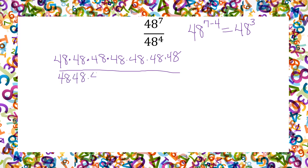These do divide out because 48 divided by itself is 1, and you're just left with 48 three times, which is 48 cubed.